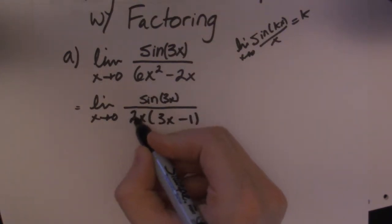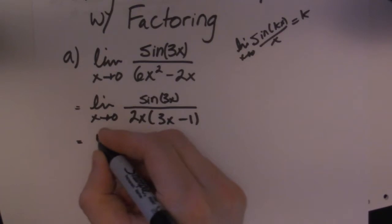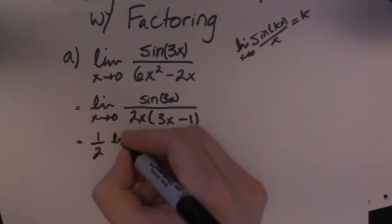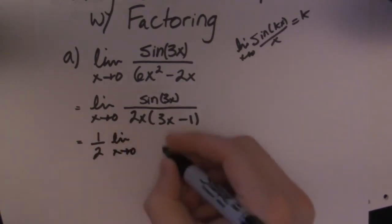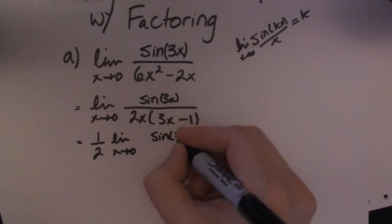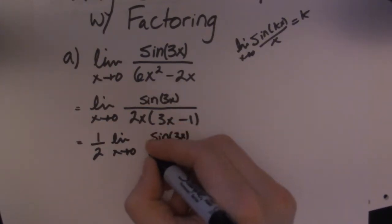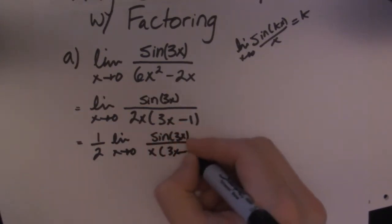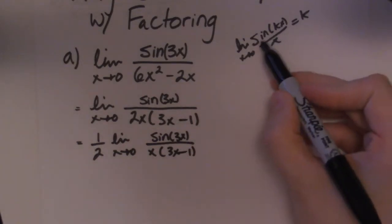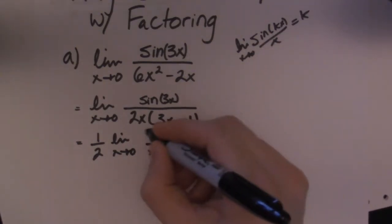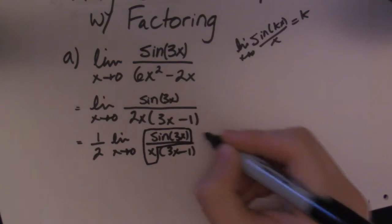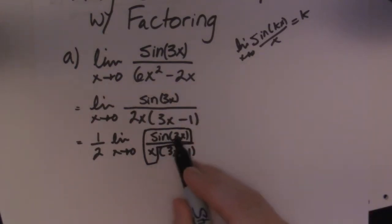So this 2 here is really doing nothing. So I'm just going to plop that outside the limit, just to sort of simplify things up in here and let me show you what's happening. So you can kind of see I've already made my sin(kx) over x right here. It's just this part right here. So the limit of that guy right there is 3.